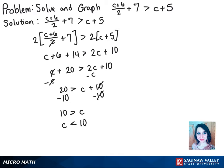And then graphing this, we'll plot 10 with an open circle, since 10 is not included in the solution. And we'll shade to the left because c is less than 10.